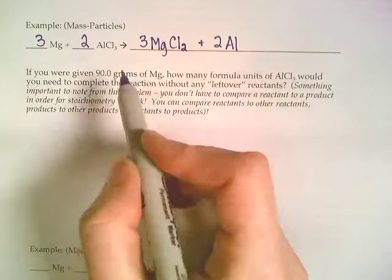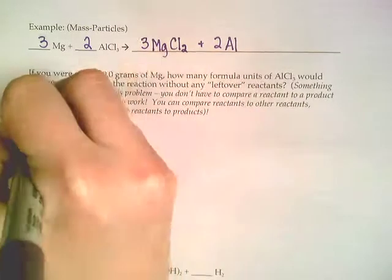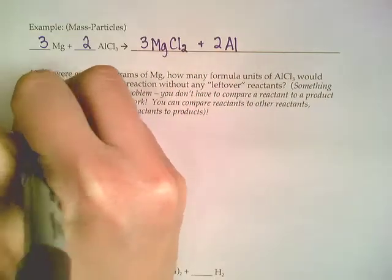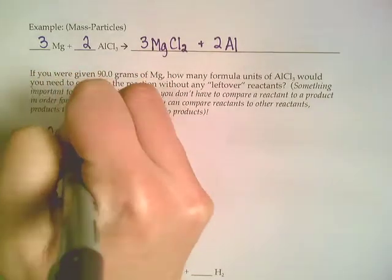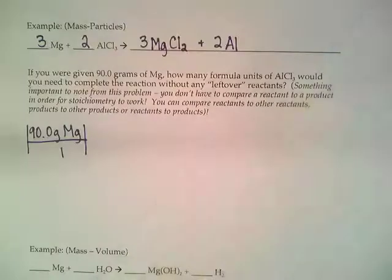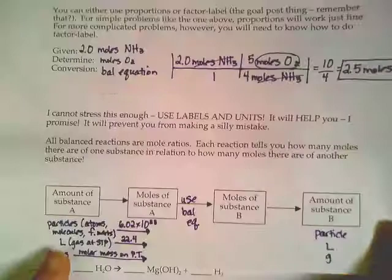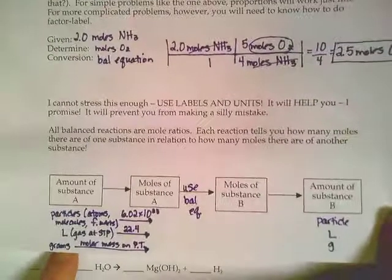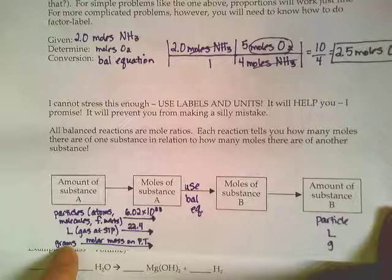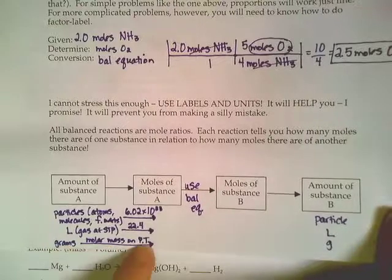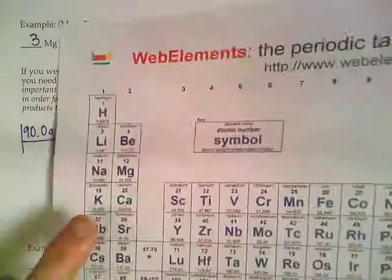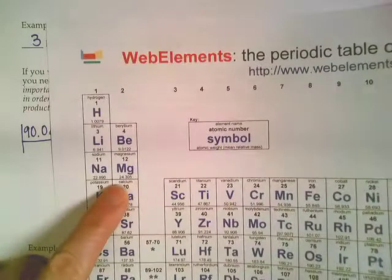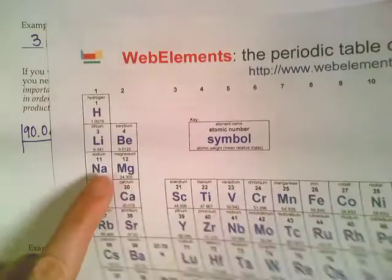So we're going to start with our 90 grams of magnesium. Our flowchart tells us that we have to get those 90 grams of magnesium into moles. And the way you get from grams to moles is by using the molar mass on the periodic table. So we would have to look up the molar mass of magnesium on the periodic table. It's about 24.3 grams per mole.